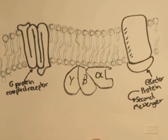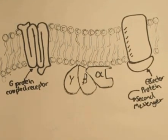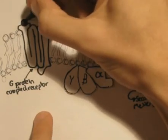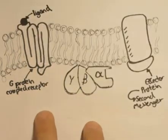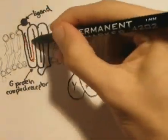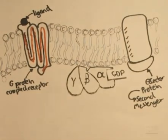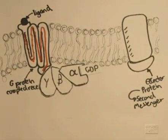The process begins when a ligand binds to the G-protein coupled receptor. This causes a conformational change that will activate the G-protein inside the cell.